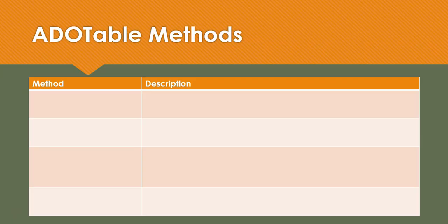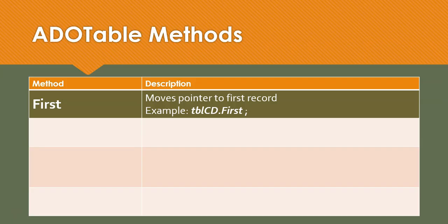Some of the methods we're going to need before we can start interacting with the data — the first one is, fittingly, called First. In a table, we have a pointer that points to which record we are currently working with, and that pointer can move around to different records. So if we want to move the pointer to the very first record, starting at the very beginning, we use the First method. If our ADO table is called tblcd, then you call tblcd.first — just like that.